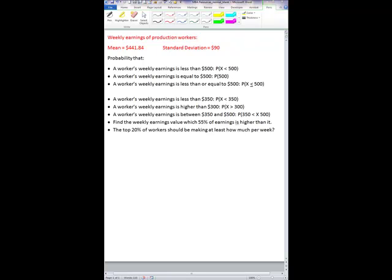Weekly earnings of production workers has a mean of $441.84 and it has a standard deviation of $90. The first problem to solve is what is the probability that a worker's weekly earnings is less than $500.